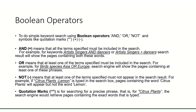AND means that all the terms specified must be included in the search. For example, for keywords artists, singers AND dancers, or artists, singers plus dancers, the search result will show pages containing both of these words.